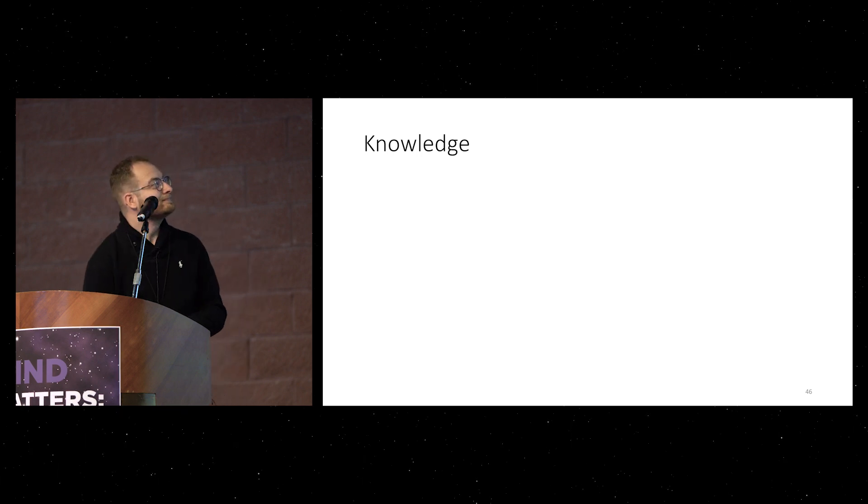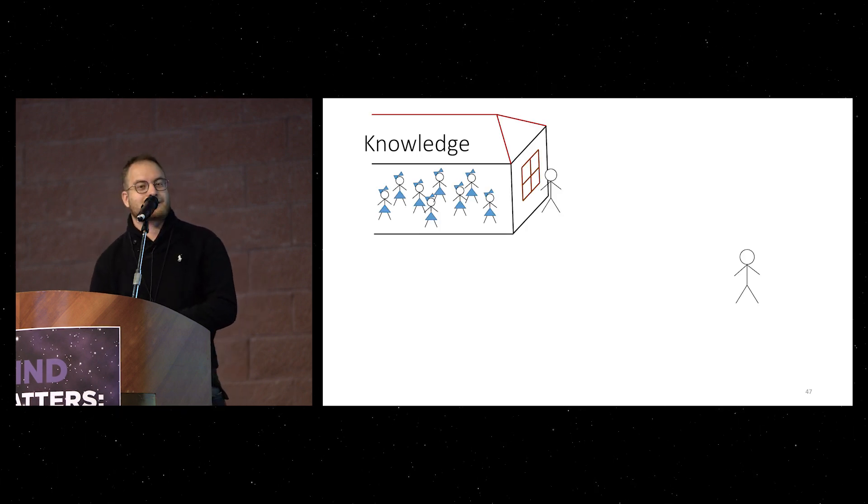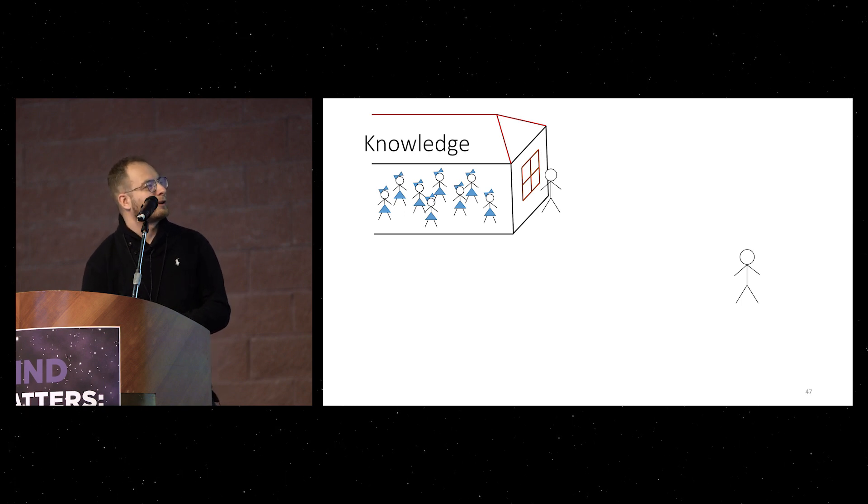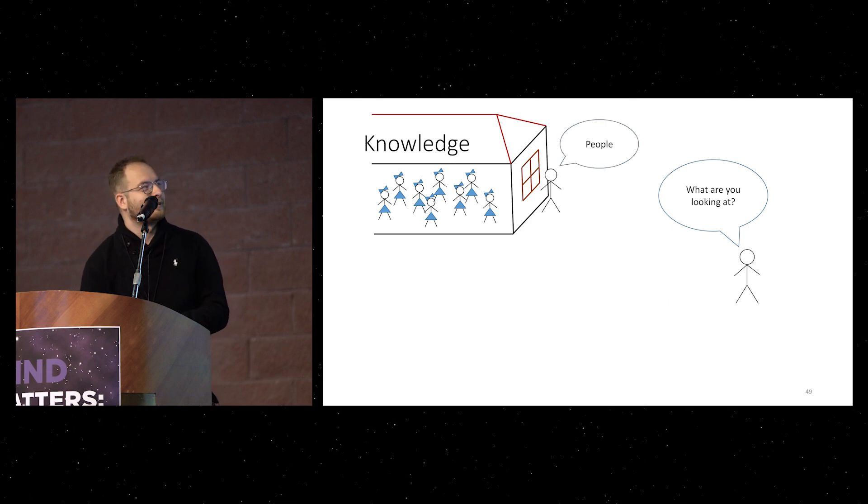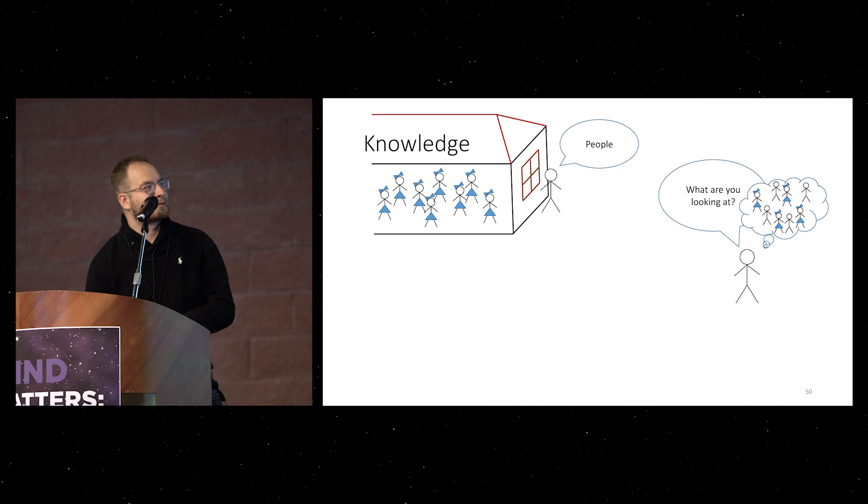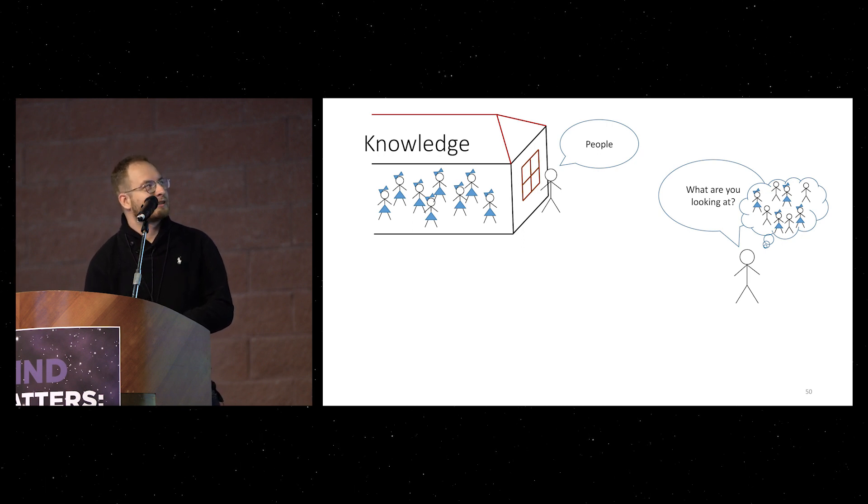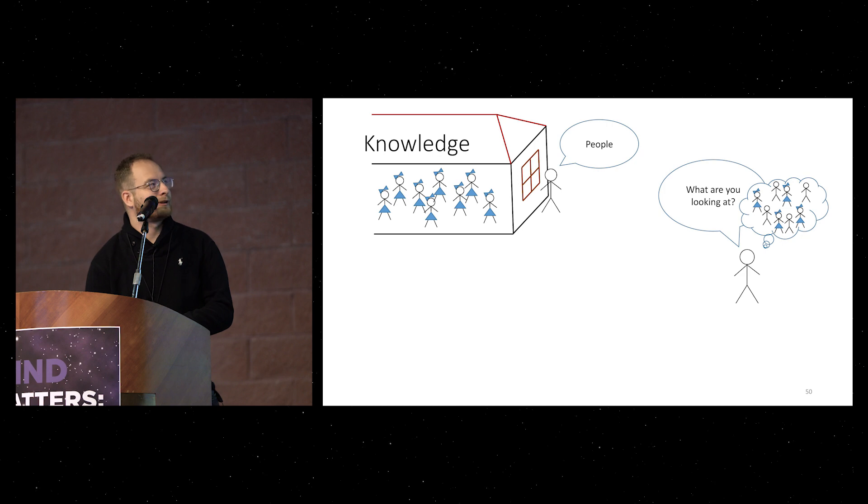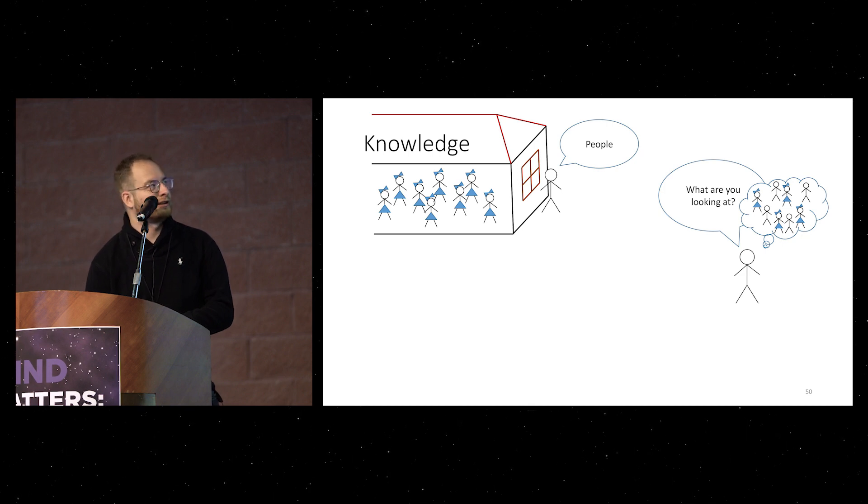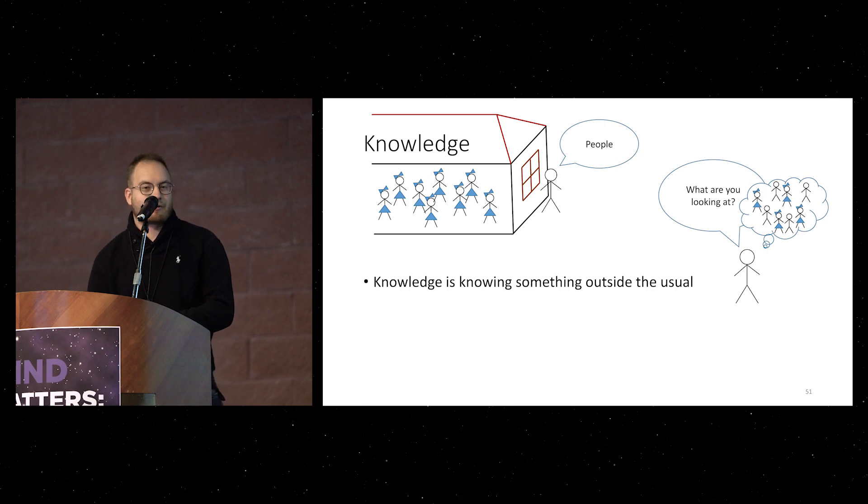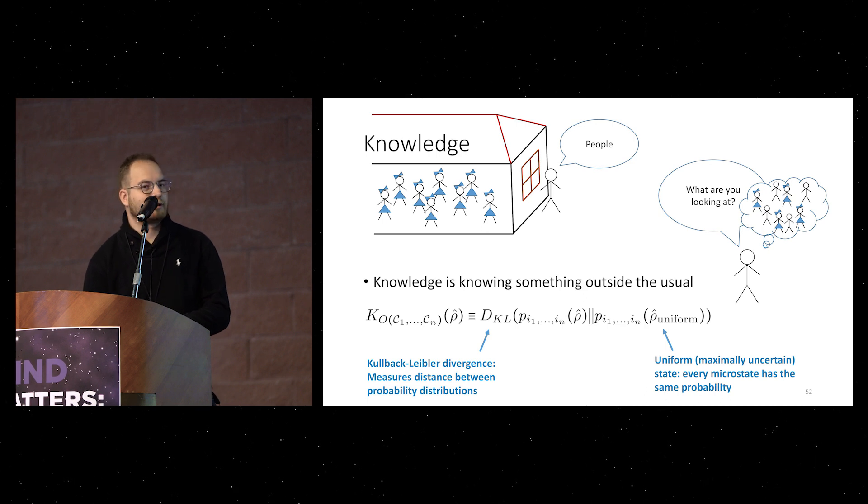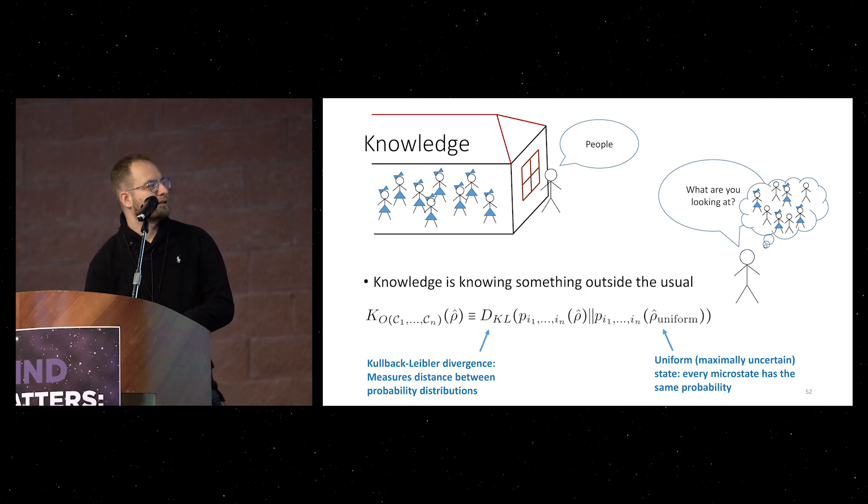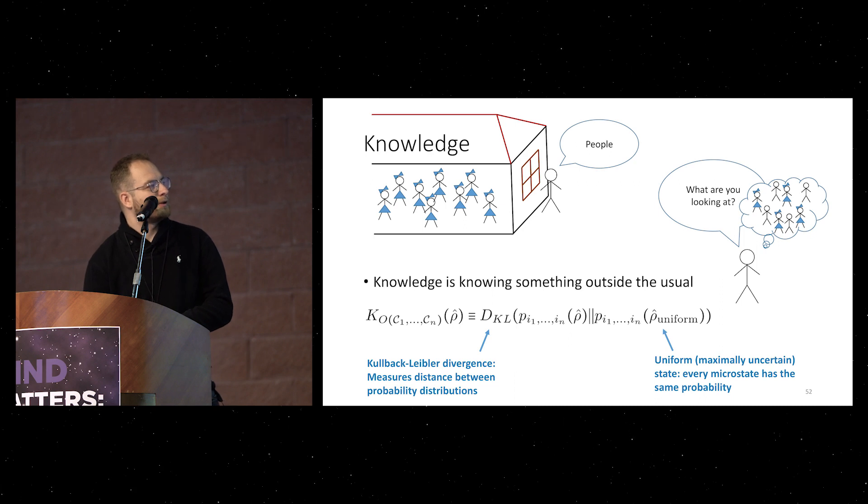And finally, we are getting to knowledge. So, let me show you another example. Let's say I'm staring into some window and my friend asks me, what are you staring at? And I tell him, well, people. So, this is what he thinks that I'm staring at, but soon he starts to suspect that I'm actually not telling him the entire truth and that I have some extra knowledge I didn't share with him. Well, I can just say that knowledge is knowing something outside the usual. And how do I define it? Well, knowing something visually is basically can be measured as like a distance of what I know from what is usual.